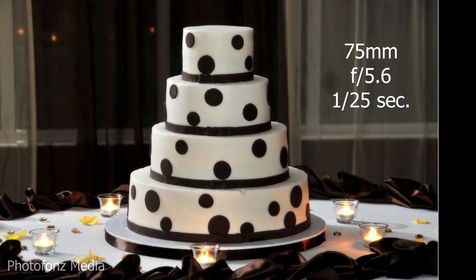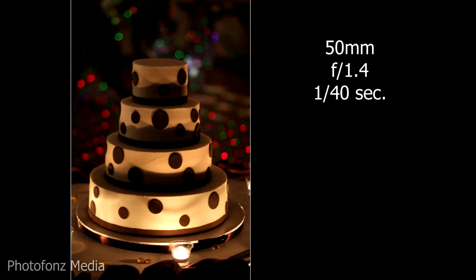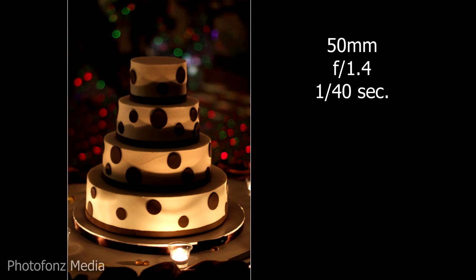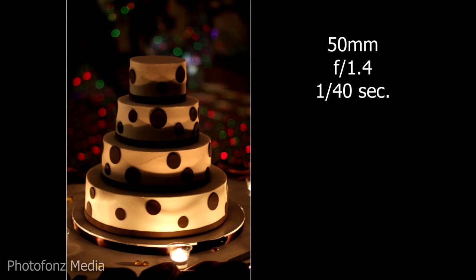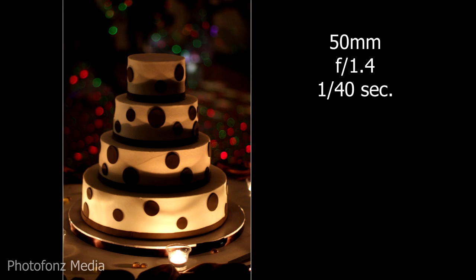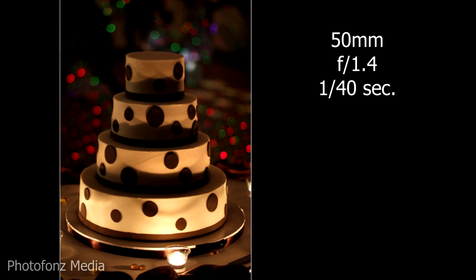Now look at the next image of the same wedding cake, where we're using just natural available light — most of it coming from the candle. The cake is in the same place, and here we can start to see little round orbs of light reflecting on the window right behind the cake.